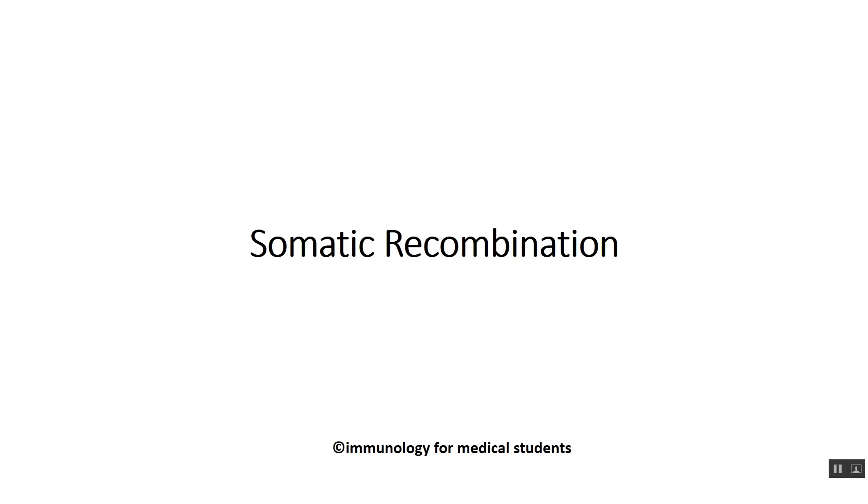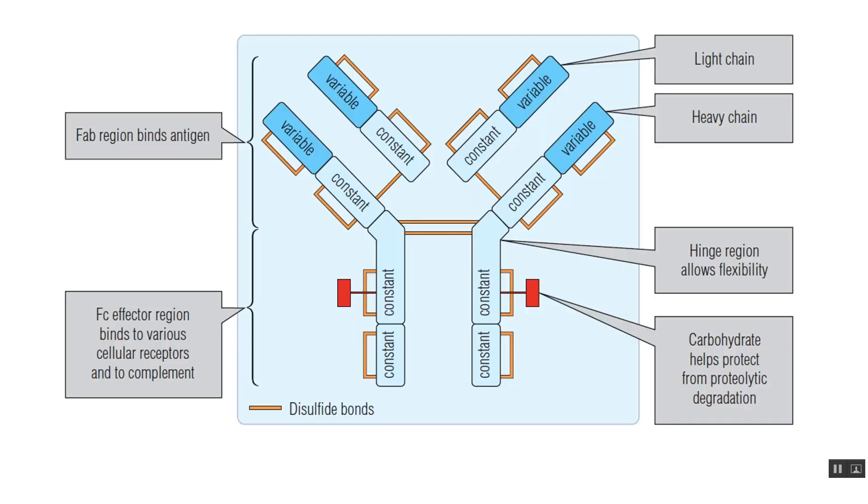In this video, I will explain the concept of somatic recombination using figures from an immunology for medical students book. First, we should know the structure of the antibody. The antibody consists of four chains: